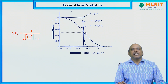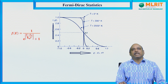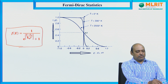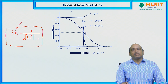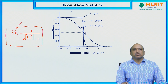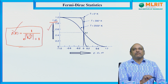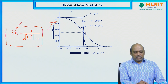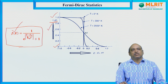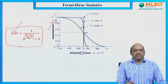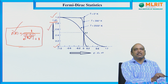Now let us analyze the Fermi Dirac distribution law graphically using three important parameters. F(E), the probability function with values from 0 to 1, is plotted on the y-axis. The second parameter is E − EF (the difference between the given energy level and the Fermi energy level) plotted on the x-axis.